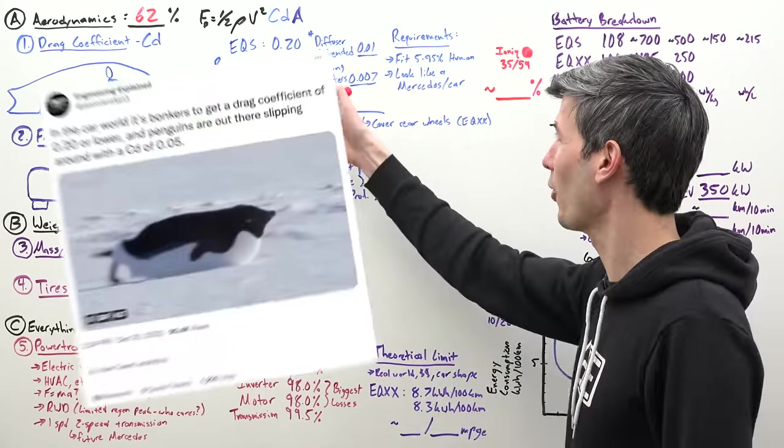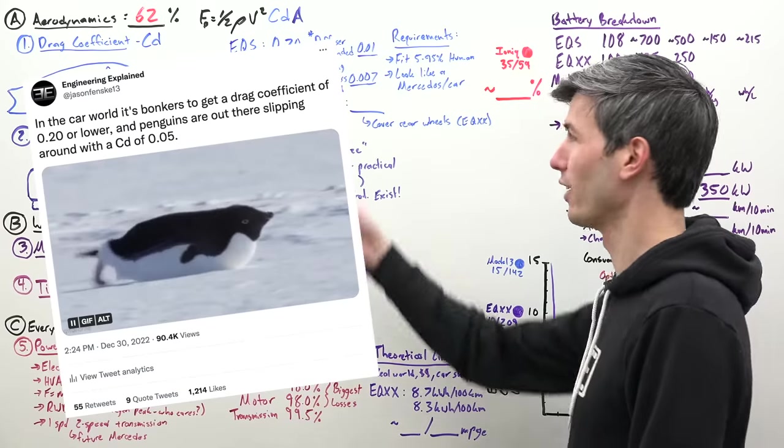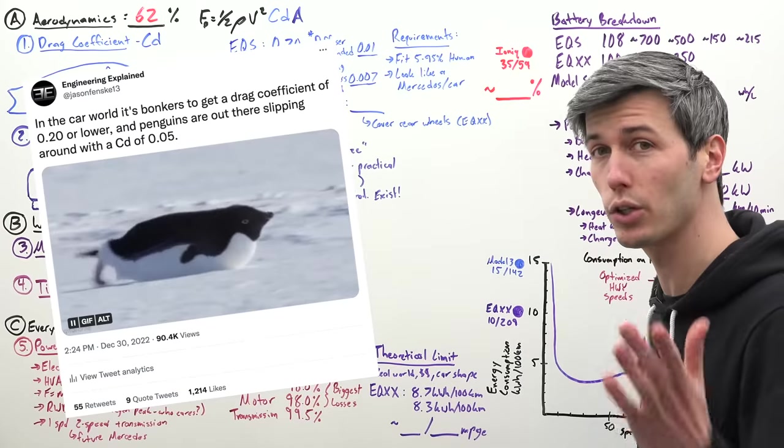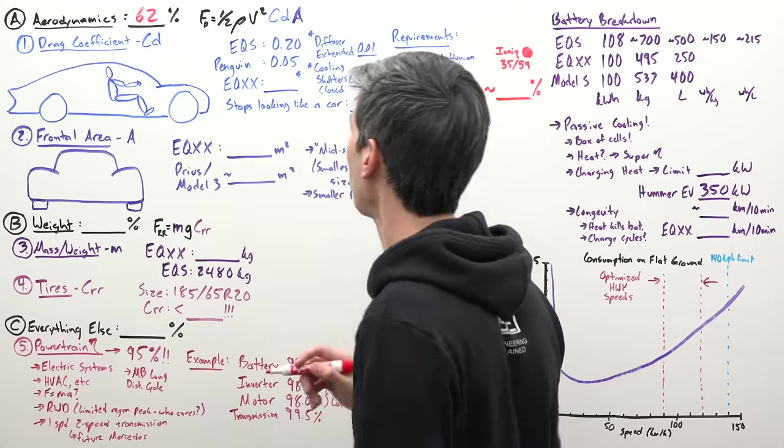A penguin has a drag coefficient of just 0.05. So we could be driving penguins. Maybe we should be driving penguins. But we're not. We're driving cars.